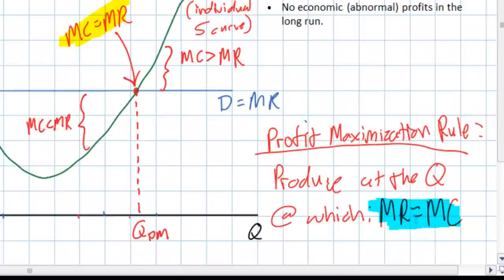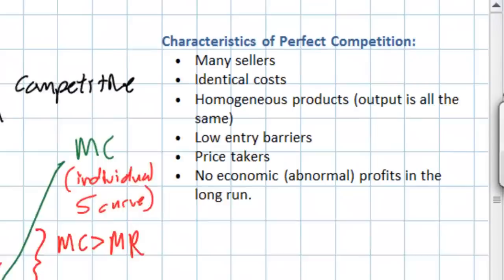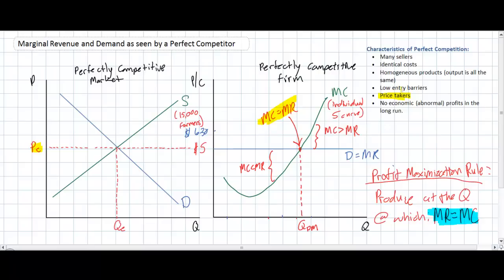That explains the profit maximization rule: in order to maximize total profits, a firm in a perfectly competitive market — or any market — should produce a quantity at which marginal revenue equals marginal cost. In this lesson we have shown how demand is determined for a perfectly competitive seller's output — it is determined by the price established in the market. With thousands of identical sellers facing identical costs, an individual firm has no control over the market price, making firms in perfectly competitive markets price takers.